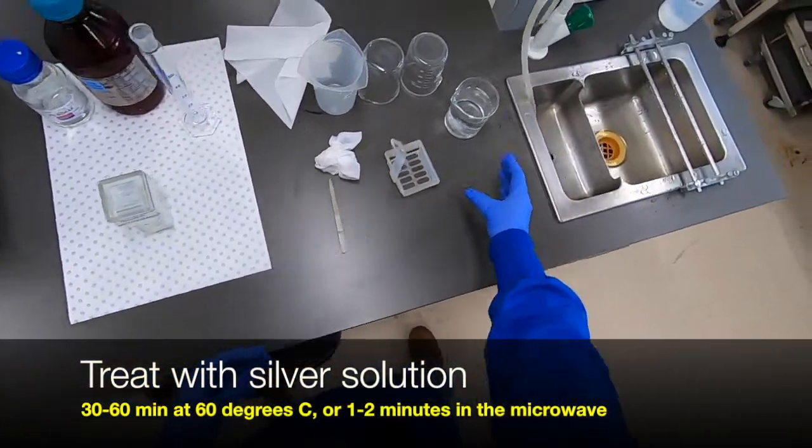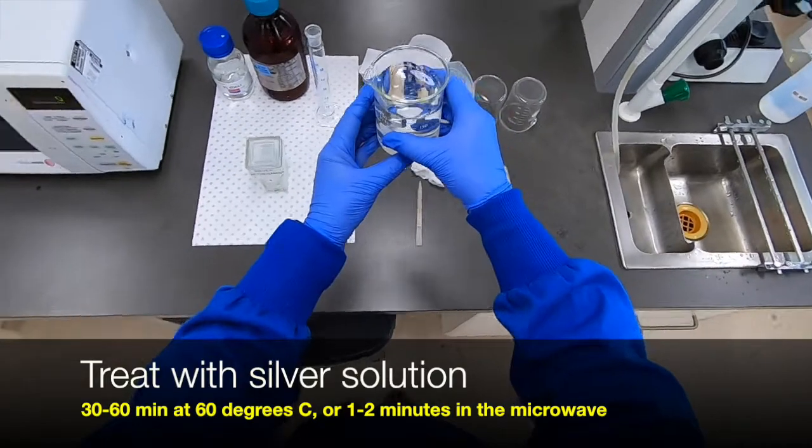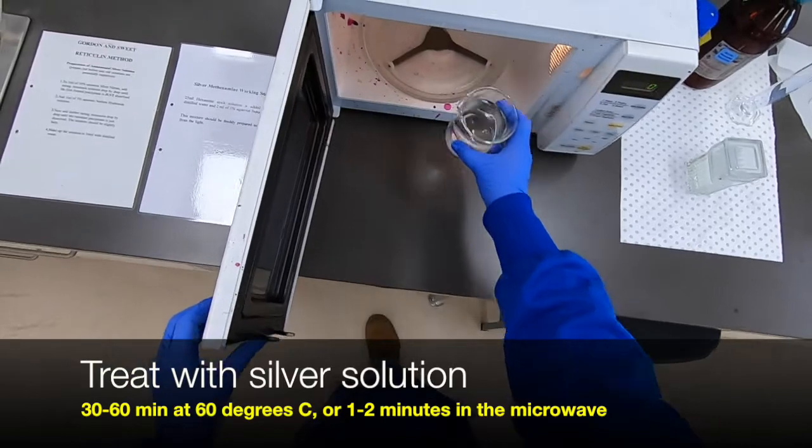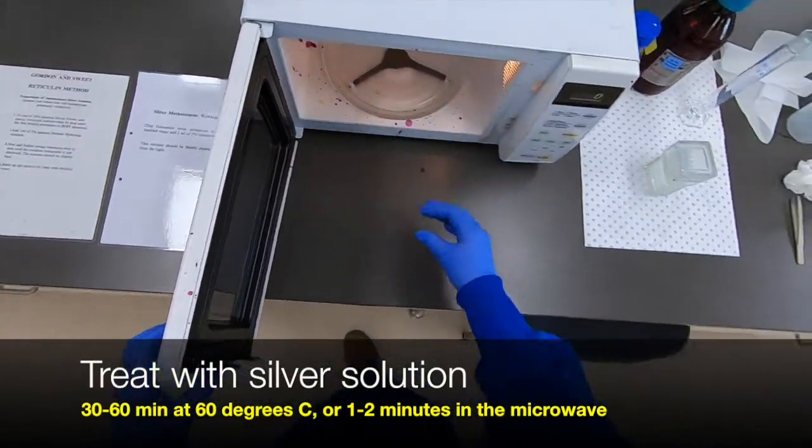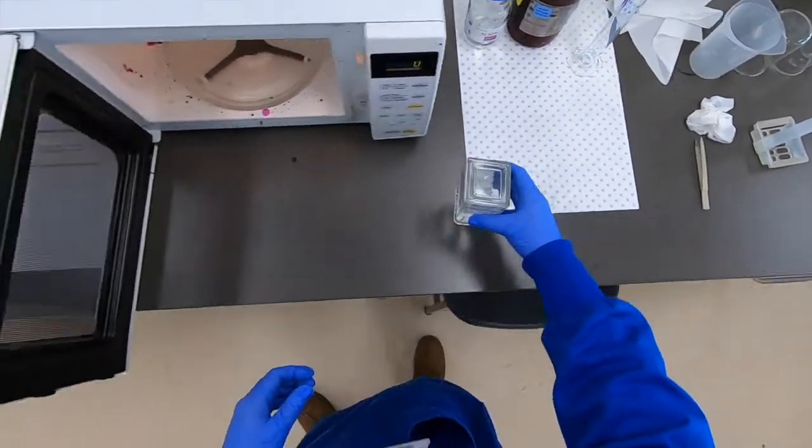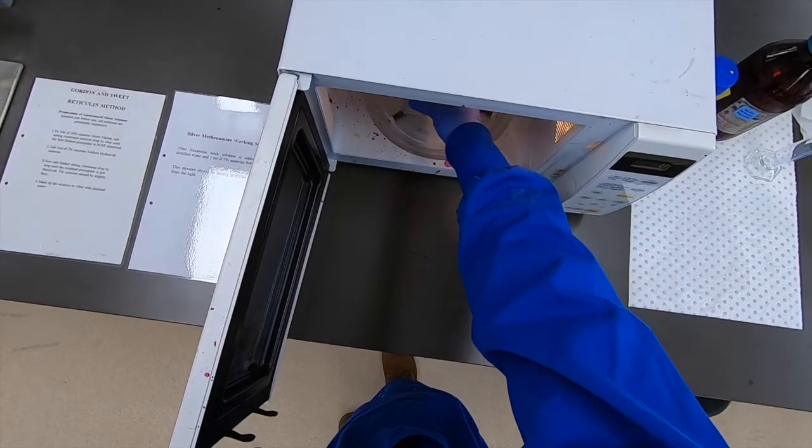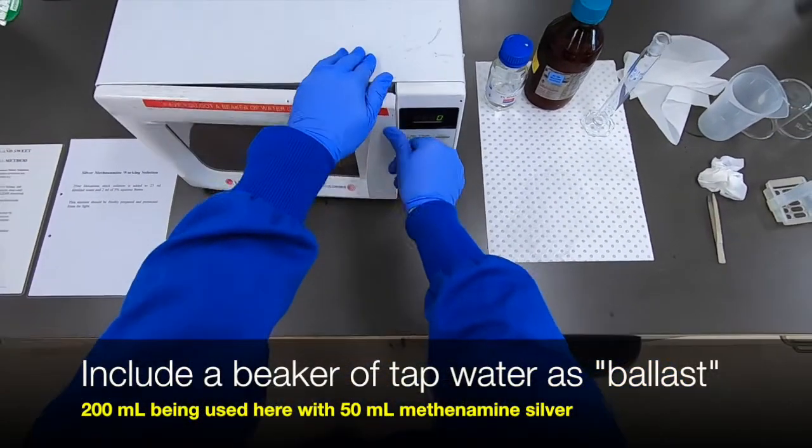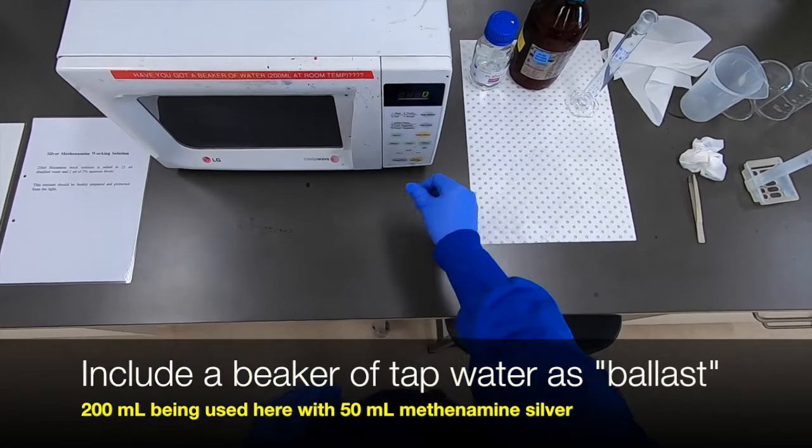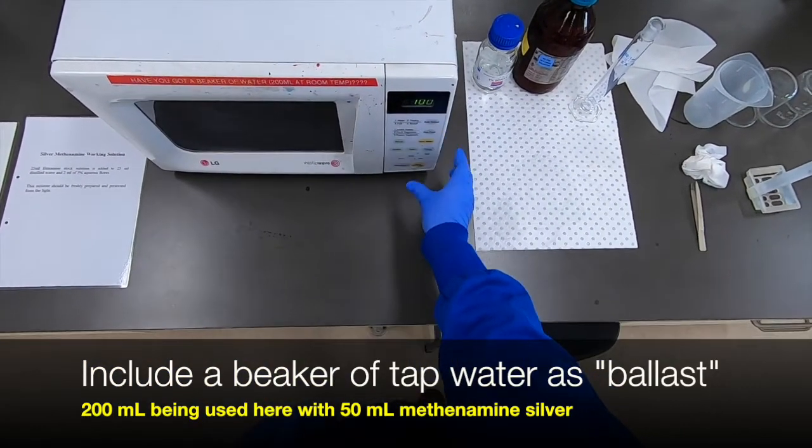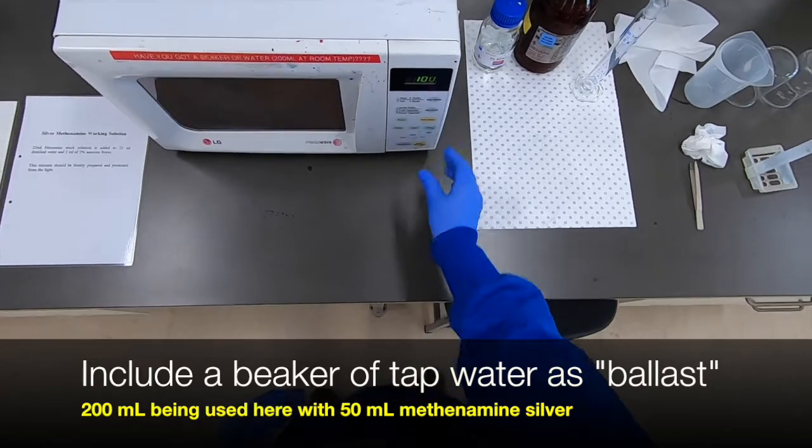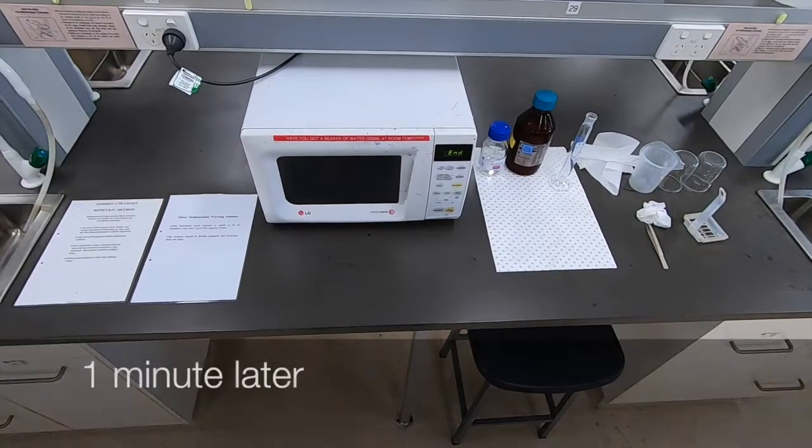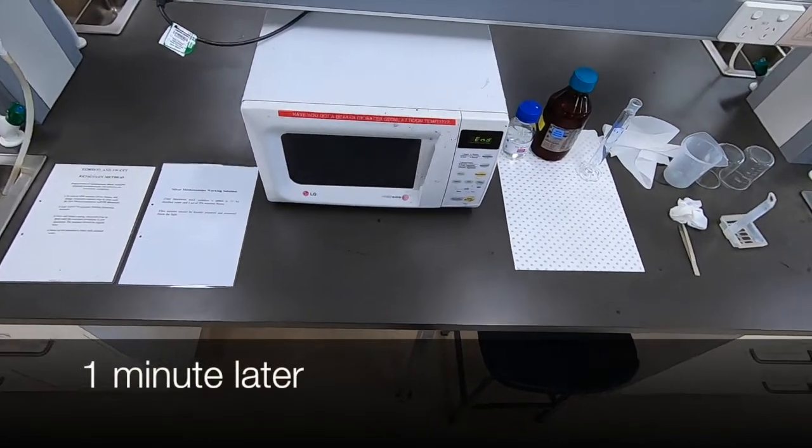You can either heat the slides for between 30 to 60 minutes in a water bath at 60 degrees. Or more routinely for convenience, we will use a microwave and we include a beaker of tap water as a form of ballast to absorb some of the energy from the microwaves. And that stabilizes your solution so that you don't get a super heating of the silver.